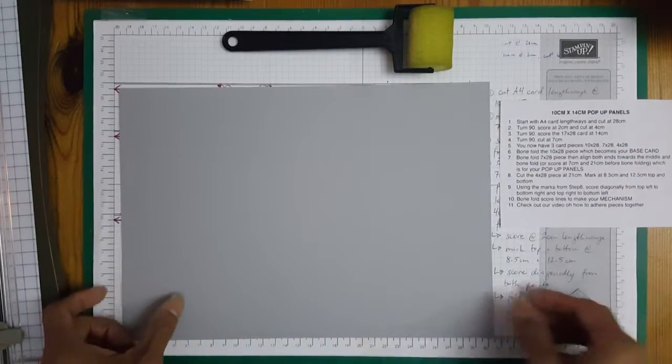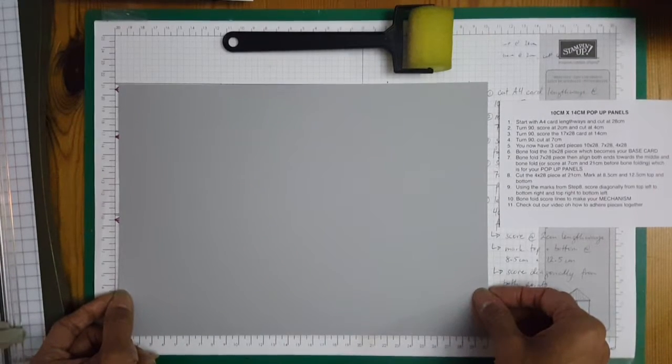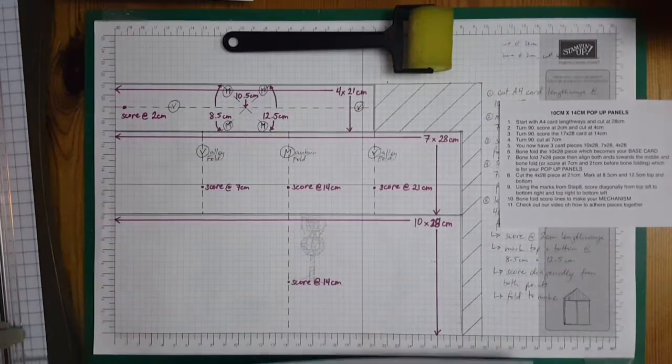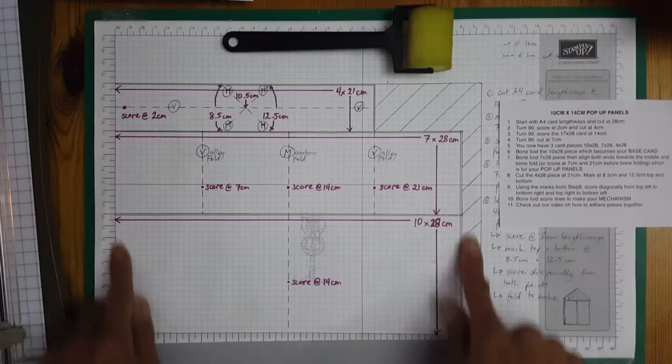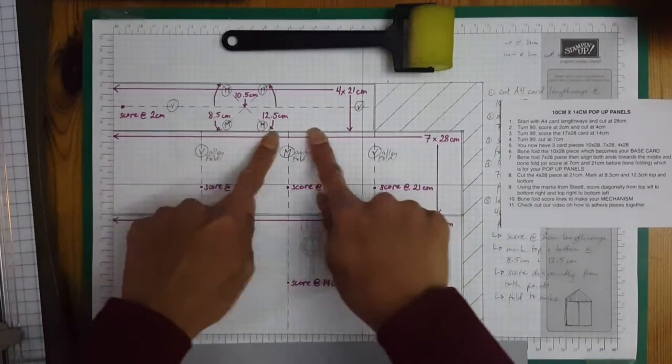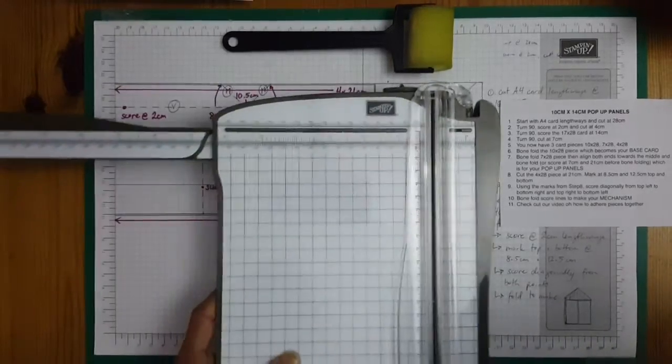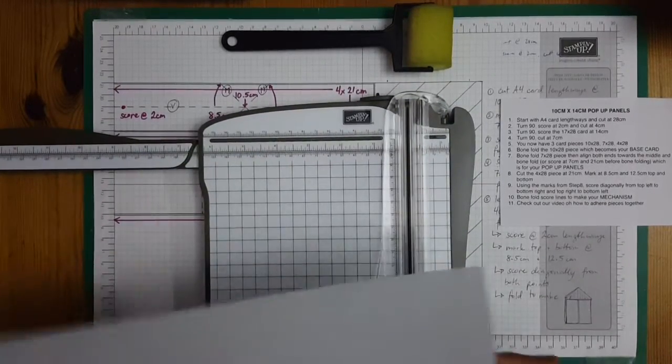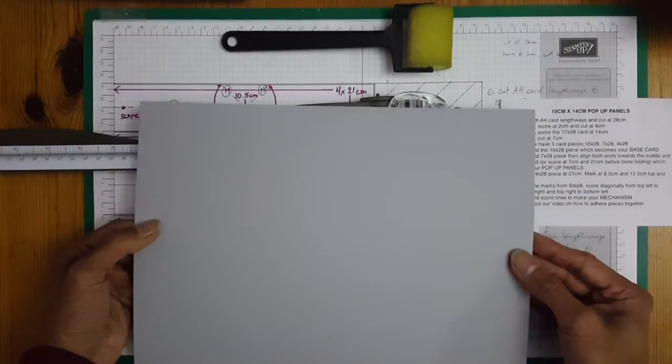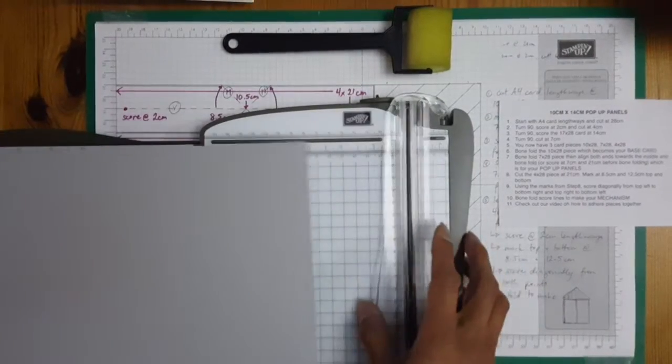So we start with an A4 piece of card and this is what we'll be doing with the card. We'll be cutting and scoring. We'll get our trimmer out. Starting with an A4 card lengthways and cut at 28 centimeters.